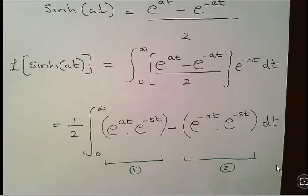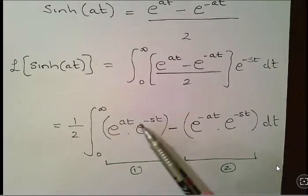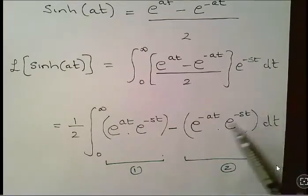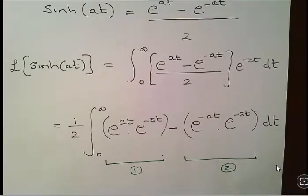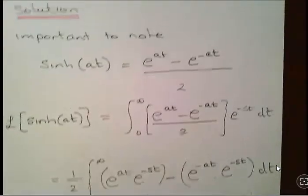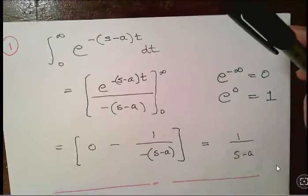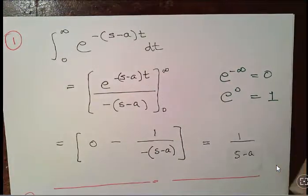So we have e to the at times e to the minus st, which is e to the minus s minus a, times t. Then minus e to the minus at times e to the minus st. Let's look at integral one: e to the at times e to the minus st, re-expressed as e to the minus (s minus a)t dt.